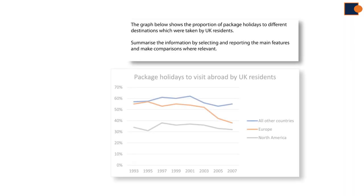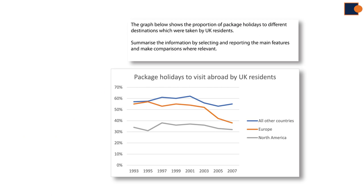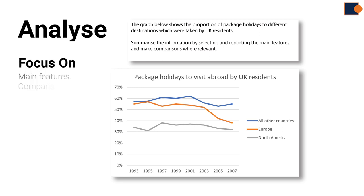Let's begin with the introduction. First, when you open the question booklet in the IELTS exam you must be familiar with the question format. The written box on top is called the rubric, which tells the main information, and below it is the actual graph that you need to explain in written form. Second, you should analyze the question by focusing on the main requirements, which are stated in the rubric — these are main features and comparison.